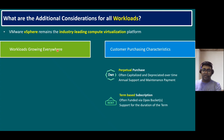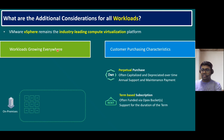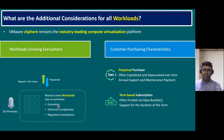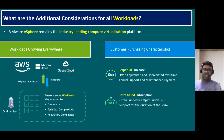Workloads are growing everywhere — any application or program running on a virtual machine, bare metal, or container. These days, workloads run on private cloud, on-premises, hybrid cloud, and more. Some workloads can be migrated to public cloud and refactored, while others stay on-premises due to economics, technical complexities, or regulatory compliance. Organizations keep certain critical applications on-premises for security reasons, while less critical workloads move to AWS, Azure, or Google Cloud.